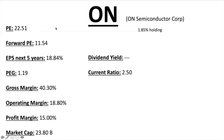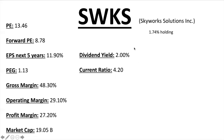ON Semiconductor, ticker ON, has a PE ratio of 22.51 — another one of my favorites, though I don't own any shares. Forward PE 11.54, EPS next five years 18.84% — PEG ratio 1.19. Gross margins are under 50% and profit margins are under 20% at 15%, but hopefully these numbers will grow larger. Overall pretty solid. Market cap $23.80 billion, no dividend, current ratio 2.5.